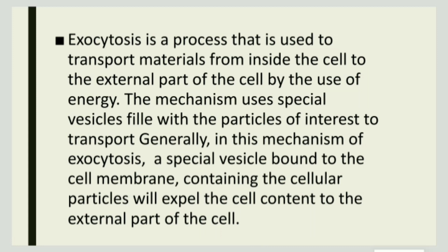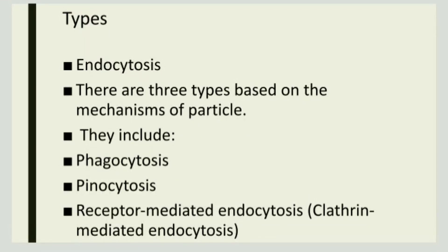There are three types of endocytosis: phagocytosis, pinocytosis, and receptor-mediated endocytosis. The first type, phagocytosis, is the process by which large molecules — including microorganisms — enter the cell from the outside environment. Phagocytosis is often known as cell eating, as large molecules are taken in through this process.